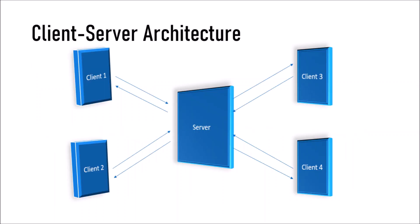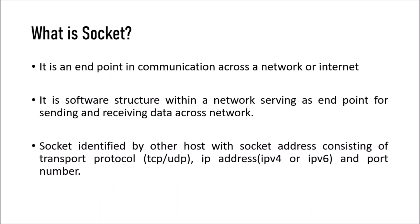In client-server architecture, whenever we are requesting something and getting something, we need a socket. A socket is involved in end-to-end communication between the client and server. There is a server and multiple clients — client 1, client 2 — requesting services and getting the service from the server. A socket is a software structure within a network used as an endpoint for sending and receiving data across the network, which is the endpoint in communication network.